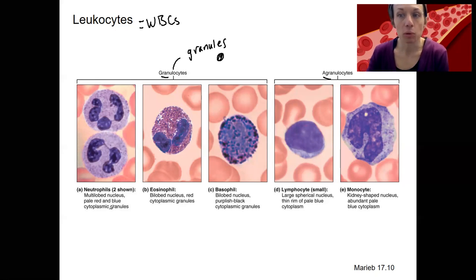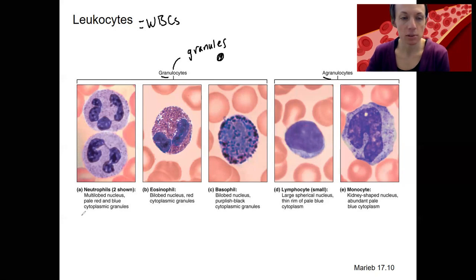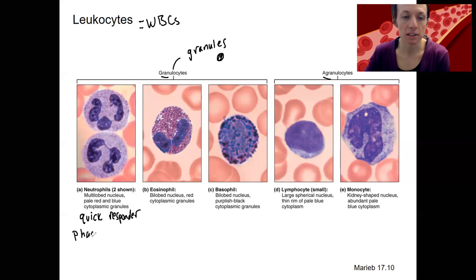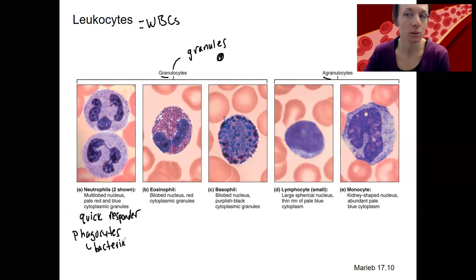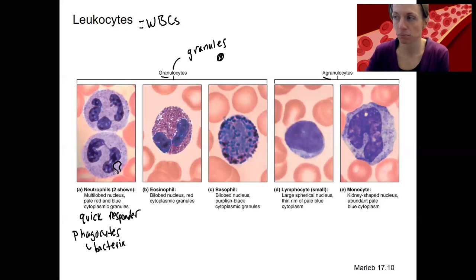These cell types are named for the stain where they're best seen, so the names aren't really that meaningful. First, you've got your neutrophils, and these are actually the most prevalent in your blood. They are quick first responders and they are phagocytes, meaning they can ingest foreign invaders — bacteria especially. Neutrophils are specialized for bacteria: they take bacteria into themselves, phagocytose them, which is a type of endocytosis, and break them down with catalytic enzymes to destroy the bacteria.